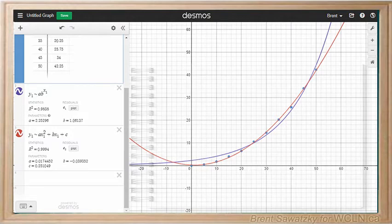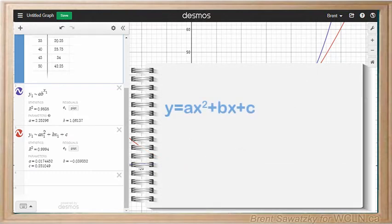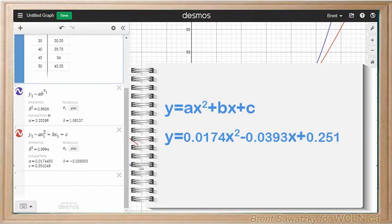So let's write out our equation with our new values. a equals 0.0174, b is negative 0.0393 and c is 0.251. And we have an equation.